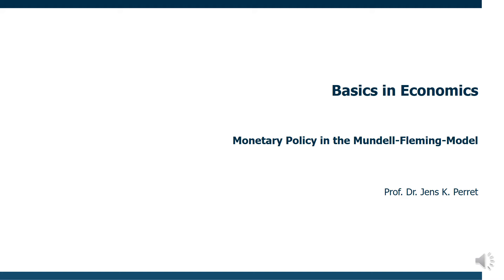Welcome to another unit in this course on economics. This time I'm going to talk about the effects of monetary policy in the context of the Mundell-Fleming model. Monetary policy simply means an increase or decrease of the money supply by the central bank. It's expansionary monetary policy if the money supply is increased, and it's restrictive monetary policy if the money supply is decreased.